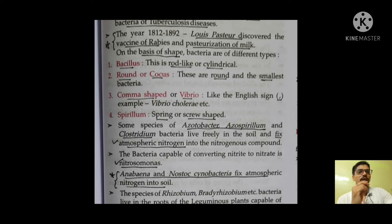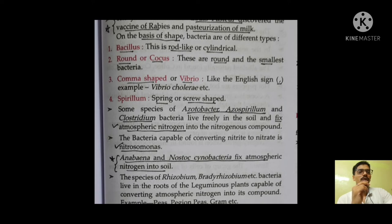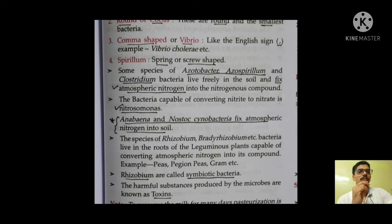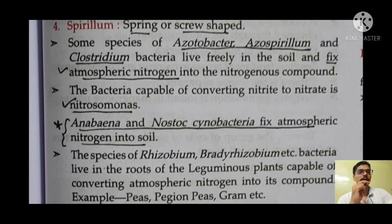On the basis of shape, bacteria can be divided into different types: bacillus — rod-like or cylindrical shape; coccus — round and the smallest bacteria; vibrio — comma shape; and spirillum — spring or screw shape. Some species of Azotobacter, Azospirillum, and Clostridium bacteria live freely in the soil and fix atmospheric nitrogen. You need to remember Azotobacter, Azospirillum, and Clostridium as nitrogen-fixing bacteria.